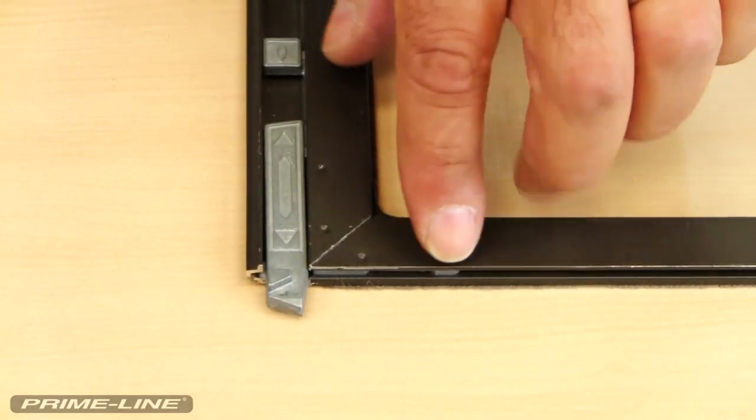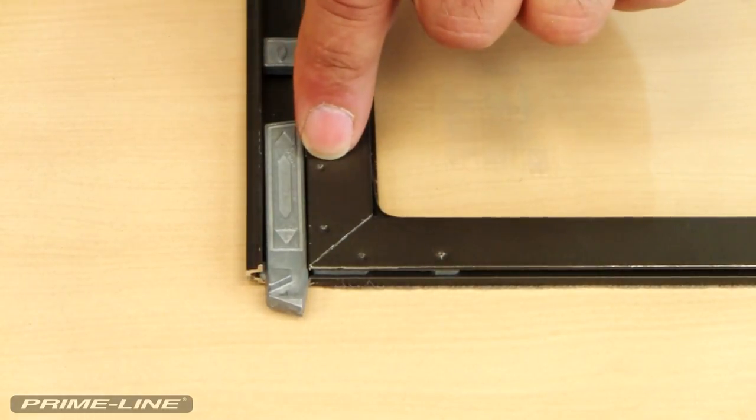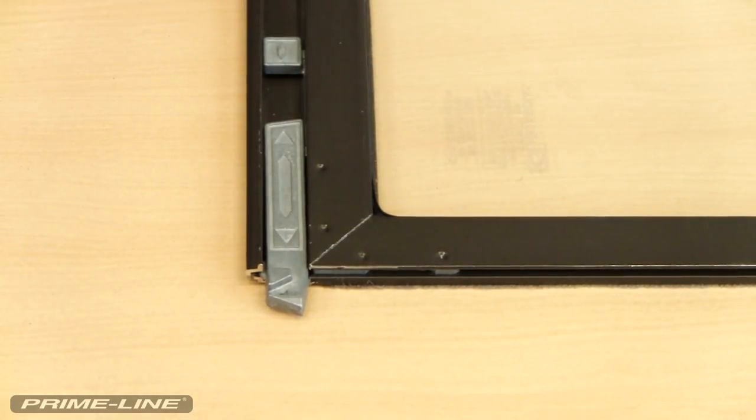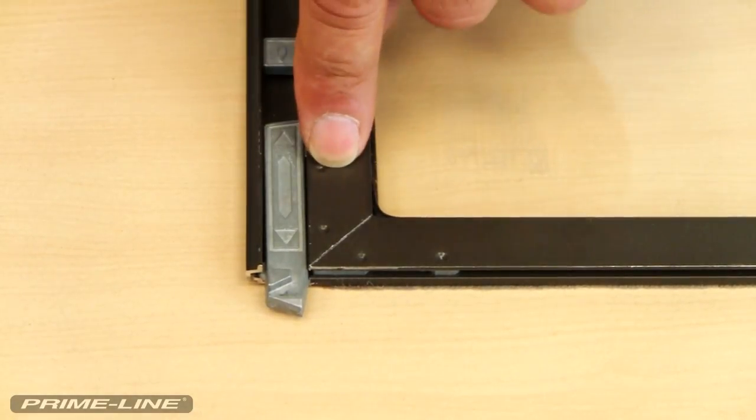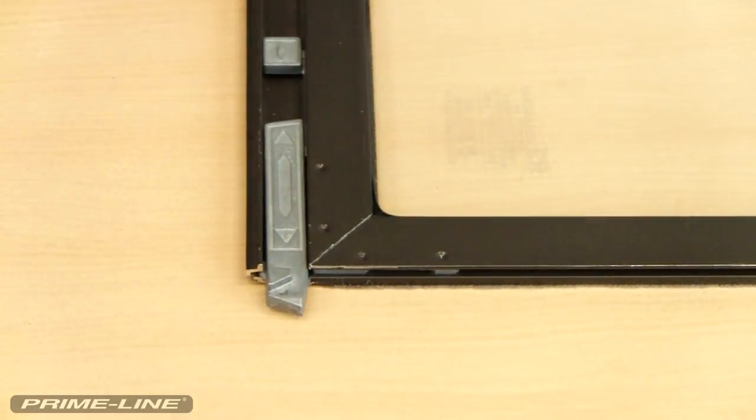Inside this frame there are some die cast corner keys which are holding the frame together. We'll need to drill out these indentations from both sides using a 3/32nd drill bit. The only thing you want to be cautious is not to drill all the way through. We just want to break through the surface on both sides one at a time.